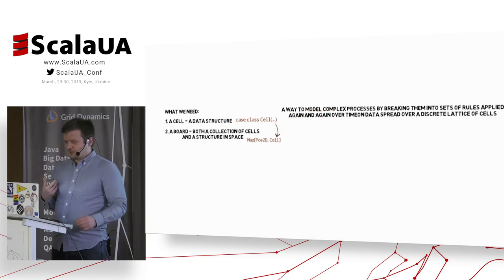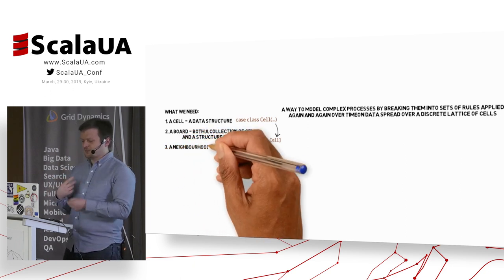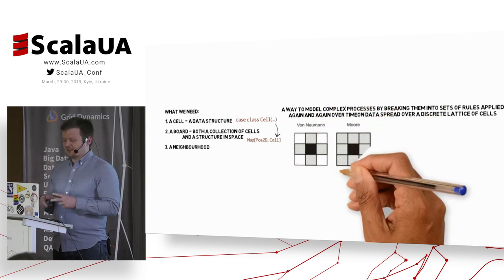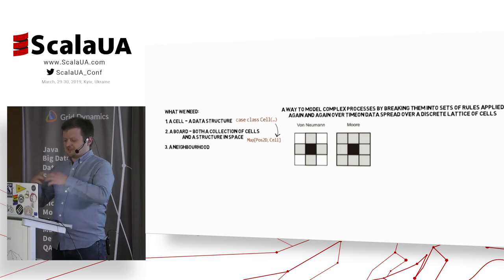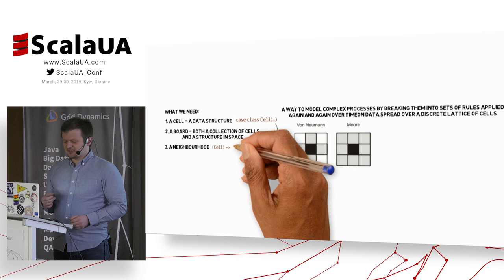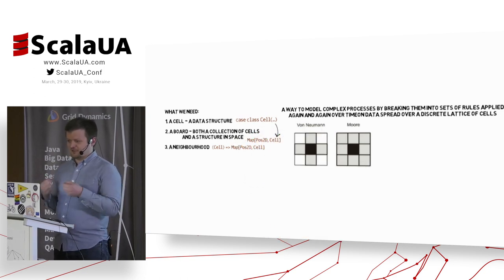Then we need a concept of neighborhood. Every cell computes its own new version by using its own data and the data of the cells around it. So it's always local. It never tries to access everything in the world. There are two most popular neighborhoods: von Neumann, which is just cells up, down, left, and right of the cell. And there's Moore, which is all cells around the one.